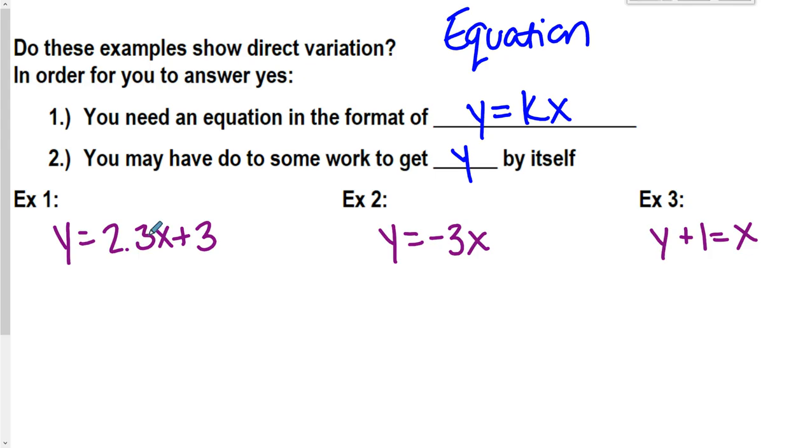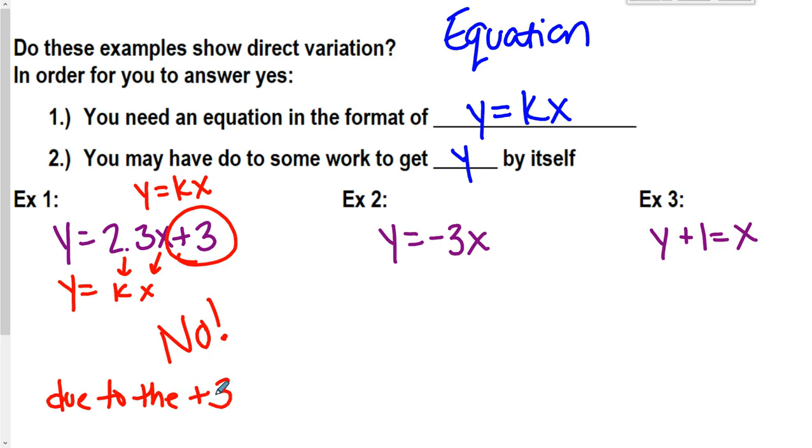I'm going to write down three different equations right here. So I look at example one. Remember, what I want to see is that y equals kx. Well, when I look at this guy, I have a y, I have, I can make this k, I have x, but I also have this plus three. So because of that plus three, you would write no, it's not direct variation. You cannot have a plus three. It literally is just y equals kx. You can't have anything added or subtracted onto the end. So no, due to the plus three.